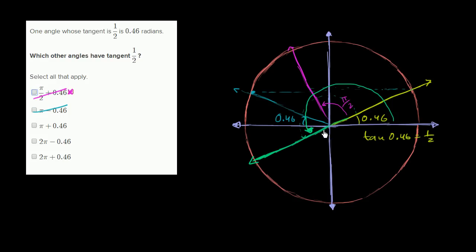When you look at this ray, you see it's collinear, it has the exact same slope as the terminal ray for 0.46 radians. That tells you the tangent is going to be the same.